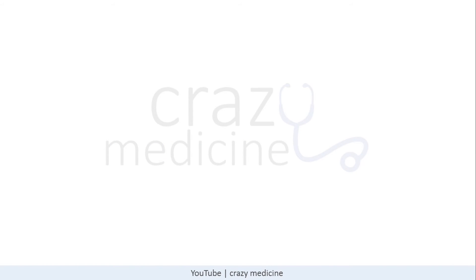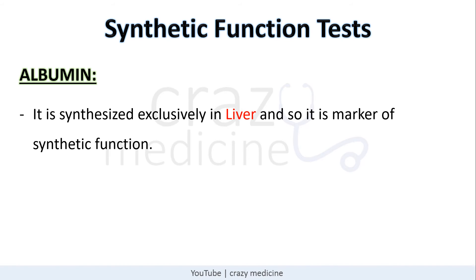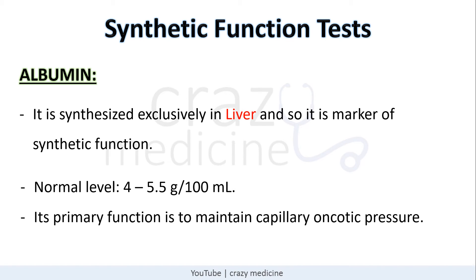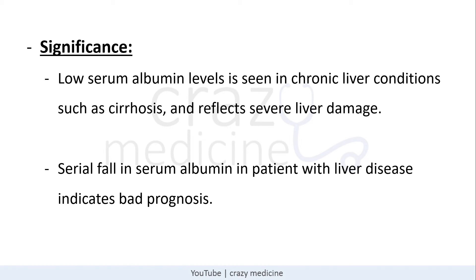Coming to the last portion of liver function tests: synthetic function tests. First is albumin, which is synthesized exclusively in the liver, making it a marker of synthetic function. The normal level is around 4 to 5.5 g/dL. Its primary function is to maintain capillary oncotic pressure. A low serum albumin is seen in chronic liver disease such as cirrhosis and reflects severe liver damage. In patients with liver disease, a serially falling serum albumin indicates a bad prognosis, making it one of the prognostic markers.